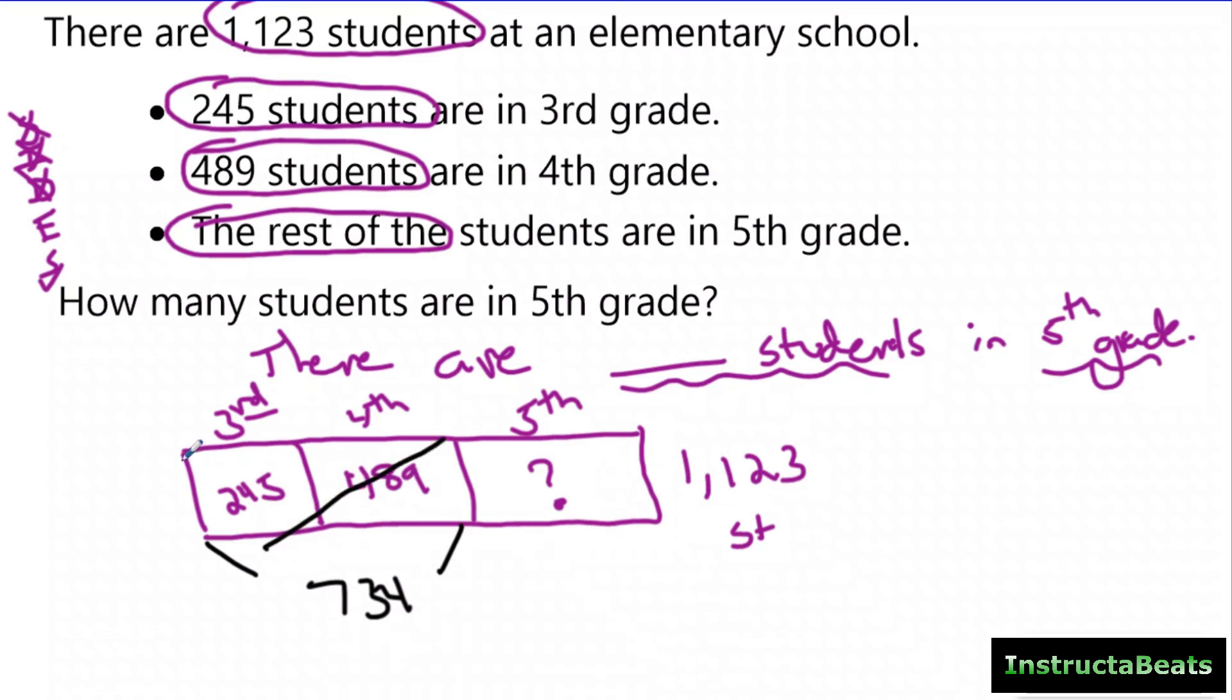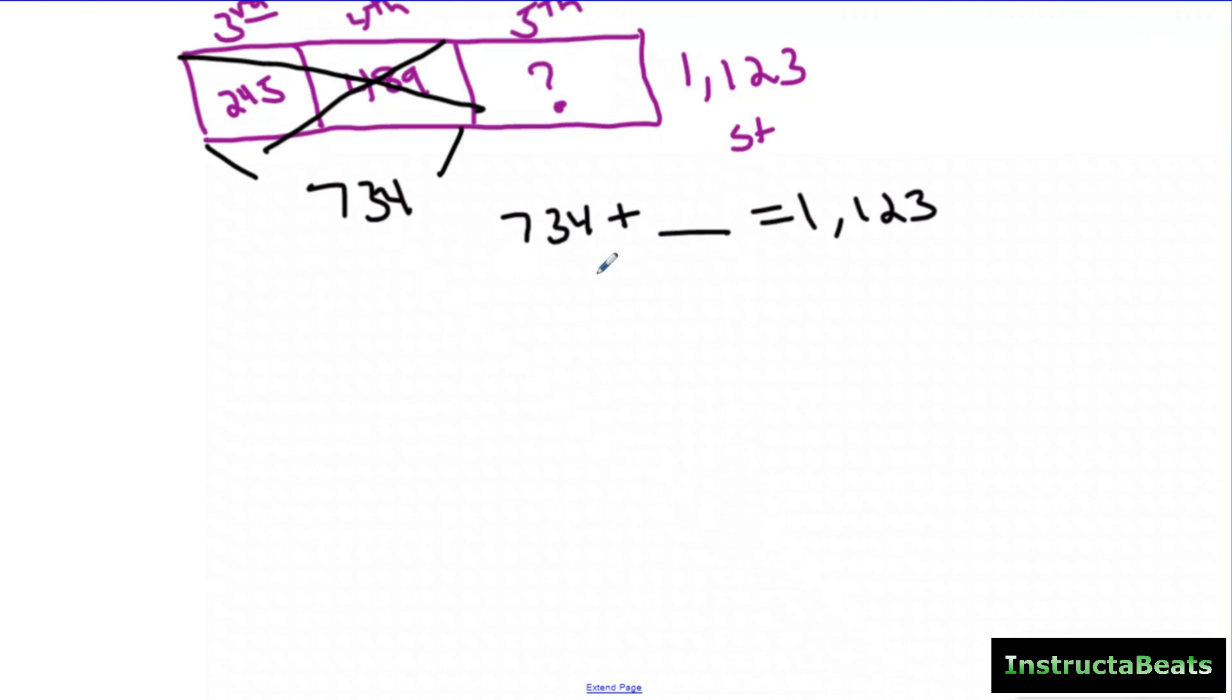And so I need to subtract this part away from my whole to help me find that missing piece. So really what you're doing here is you're doing 734 plus something is giving you 1,123. And then to solve that, you're using your inverse operation, using your fact family knowledge to help you solve it. But you're not just having your students memorize it.